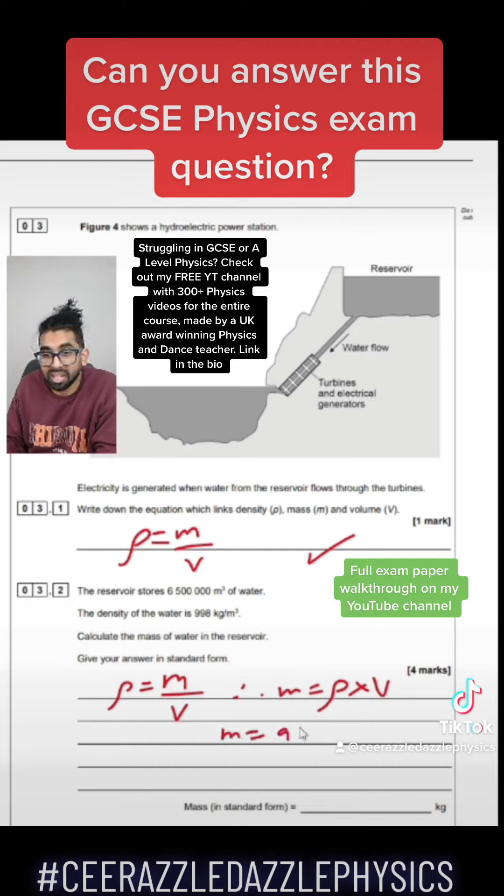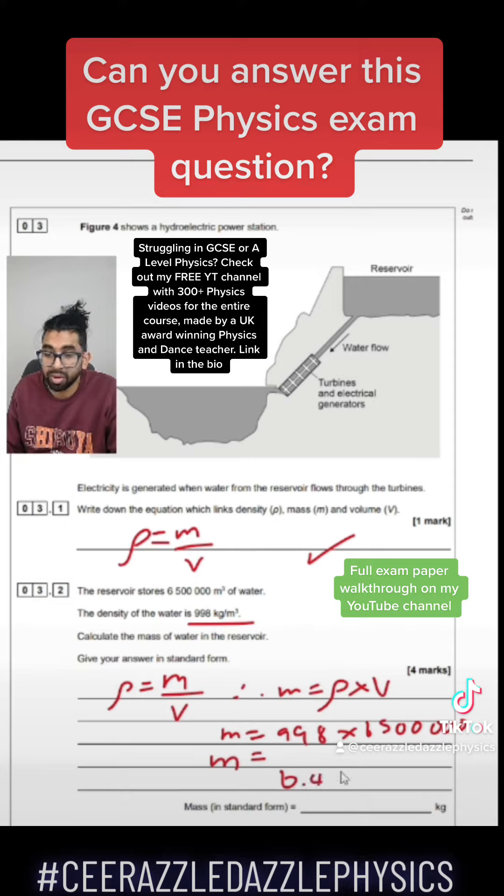Mass is equal to the density, 998, times the volume, 6,500,000. Therefore, the mass is 6.49 × 10⁹. Yes, and my answer is in standard form just like the question asks.